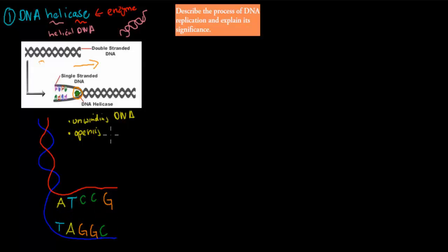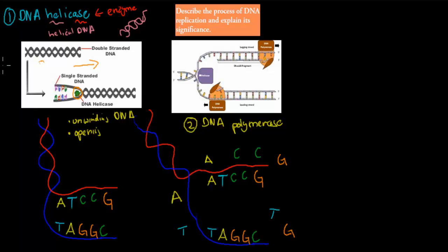Helicase unwinds the DNA and opens the bonds — it breaks the bonds between the different nucleotide bases. That's the first step. The second step is another enzyme — again with '-ase' at the end — called DNA polymerase.